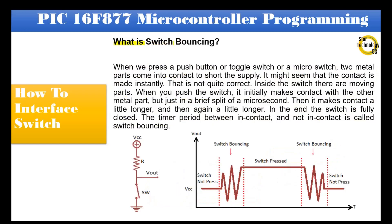What is switch bouncing? When we press a push button, toggle switch, or micro switch, two metal parts come into contact to short the supply. It might seem that the contact is made instantly, but that is not quite correct. Inside the switch there are moving parts. When you push the switch, it initially makes contact with the other metal part but only for a brief split of a microsecond, then a little longer, and then again a little longer. In the end the switch is fully closed. The time period between being in contact and not in contact is called switch bouncing.